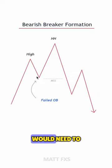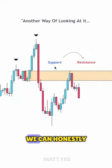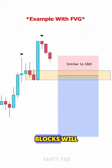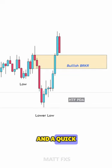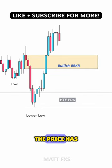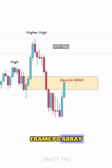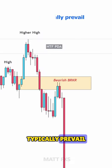The same situation would need to occur except it would be inverted in order for a bearish breaker block to form. We can think of this as support flipping into resistance after a liquidity grab, or vice versa. Breaker blocks will often line up with fair value gaps as well. A quick tip is that breakers will work best if the price has also respected a higher time frame PD array, as the price delivery on higher time frames will typically prevail.